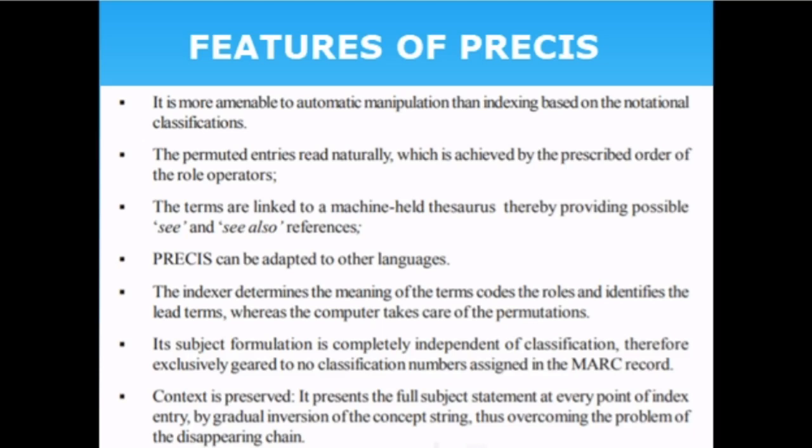The features of PRECIS: it is more amenable to automatic manipulation than indexing based on rotational classification — the computer does the work. The indexer manually prepares the input strings only; the computer performs the indexing operations. The permuted entries read naturally, issued by the prescribed order of role operators. PRECIS can also be adapted to other languages.